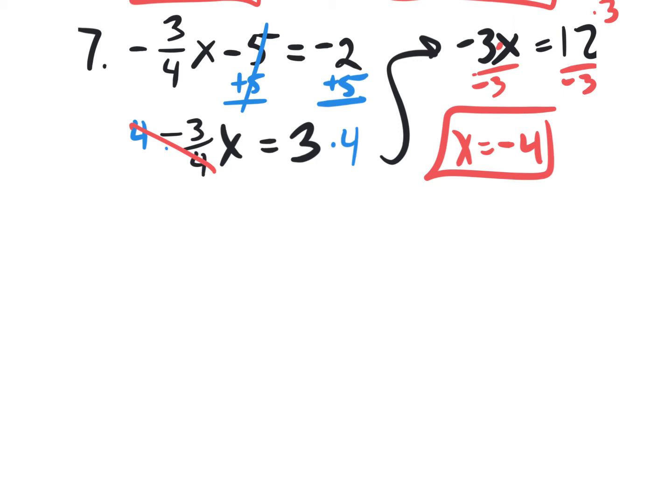Let's take another minute or two on question number 7 that we just did. Does everybody understand how we got the answer? I want to explain something else. Let me rewrite number 7 right here. There's the equation: negative 3 fourths x minus 5 equals negative 2.